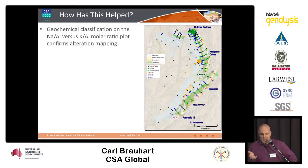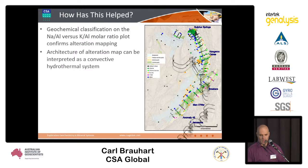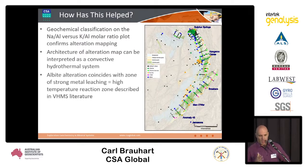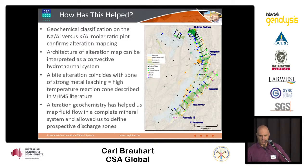To recap how this has helped: the geochemical classification has confirmed the results of the alteration mapping. The architecture of an alteration map can be interpreted as a convective hydrothermal system, which maps out the whole mineral system. Albite alteration coincides with a zone of strong metal leaching - that's the high temperature reaction zone described in the VMS literature. The alteration geochemistry has helped us map fluid flow in a complete mineral system.